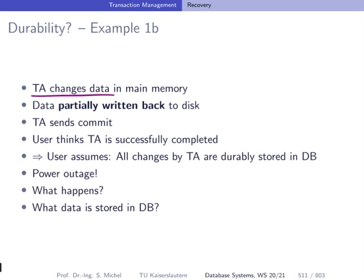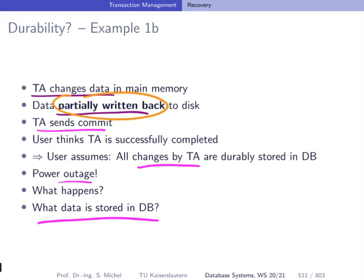Now assume a transaction changes data in memory and that data has been partially written back — not all pages modified by the transaction, but only some of them. The transaction sends commit, the user assumes everything is fine and changes are durably stored. Then a power outage happens. The problem is we have only partially written back data to disk, so the sum of the data changed by the transaction is not persistently stored. Additionally, we have inconsistent data on disk because the transaction only changed parts of the pages.